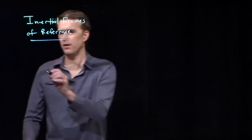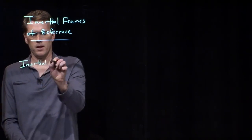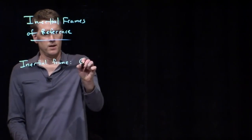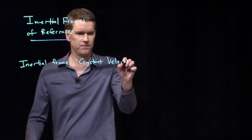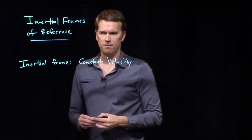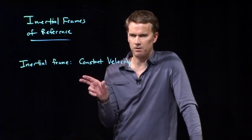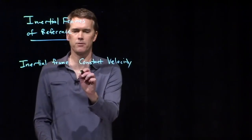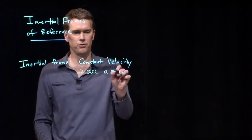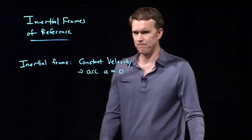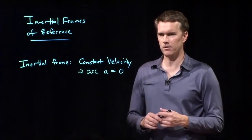What does inertial mean? An inertial frame is one that has constant velocity. Your inertial frame has to have constant velocity. If there is constant velocity, that of course means acceleration a is equal to zero in that frame. Whatever frame you are in, you cannot have any acceleration.